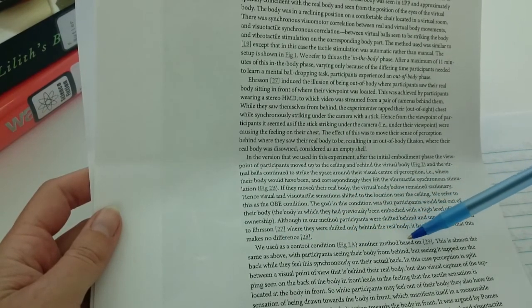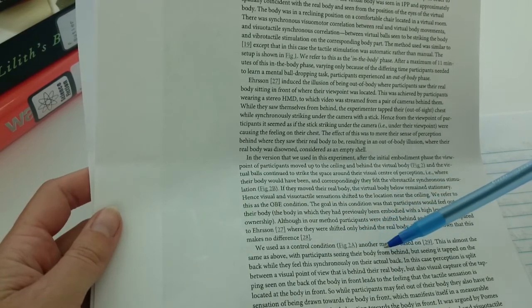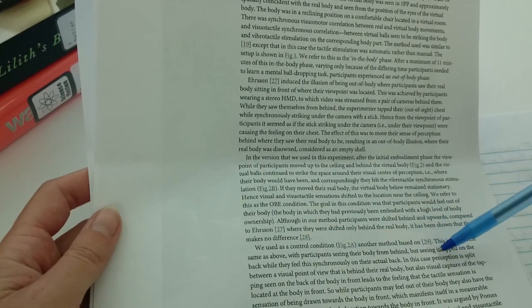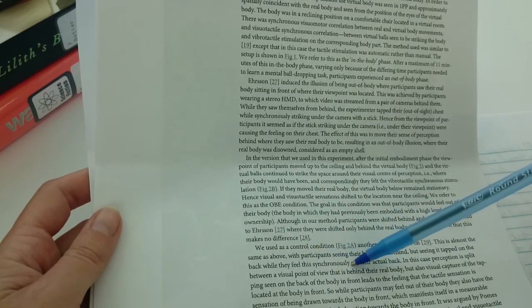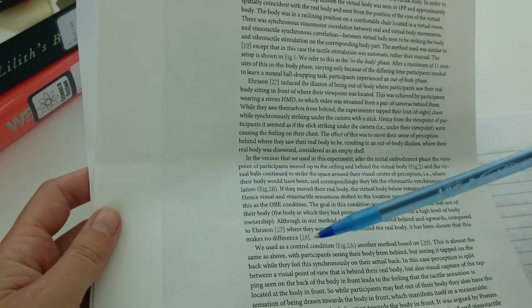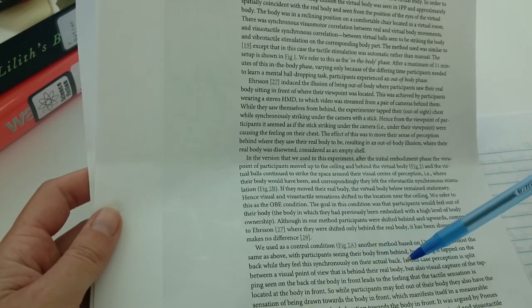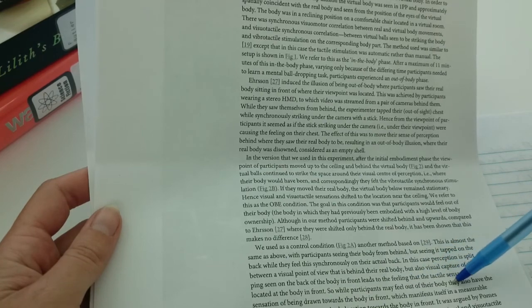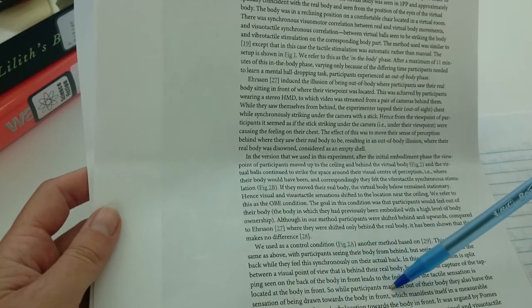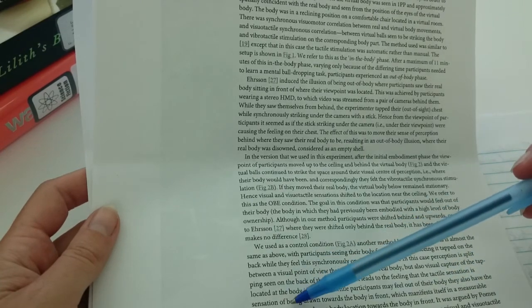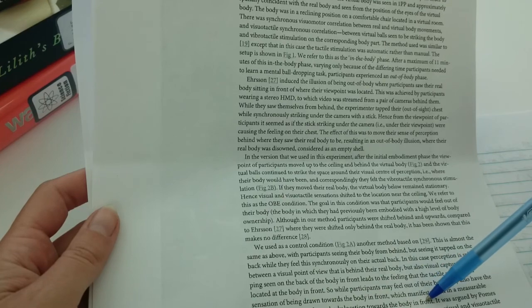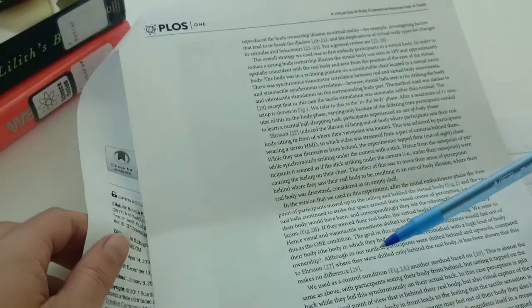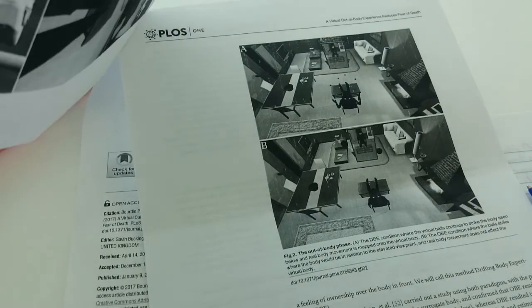They used a control condition, which was another method, almost the same as above, with participants seeing their body from behind, but seeing it tapped on the back while they feel the synchronously on their actual back. In this case, perception is split between a visual point of view that is behind the real body, but also visual capture of the tapping seen on the back of the body in front as to the feeling that the tactile sensation is located at the body in front. So while participants may feel out of their body, they also have the sensation of being drawn towards the body in front, which manifests itself in a measurable drift in their estimated own body location towards the body in front. They did a figure of this one, 2A, so better look at that one because it's hard time grasping that one.